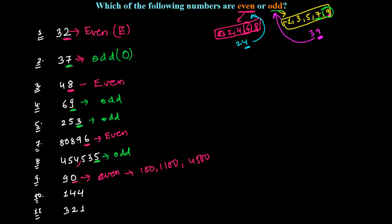The next one is 144. So 4, it comes here, right? Here is the 4. So that's why this is again an even number.